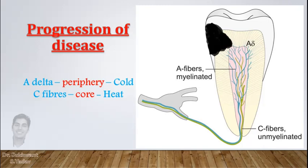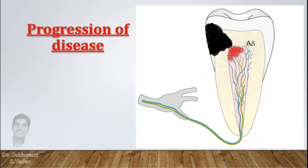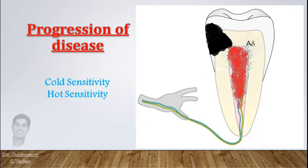Now as A-delta fibers are at the periphery, they will get inflamed first from any stimuli like bacteria from caries or their toxins. So when pulp inflammation starts, first cold sensation aggravates. Then if no treatment is provided, inflammation reaches the C-fibers in the core and the tooth becomes sensitive to both hot and cold, as A-delta fibers are still inflamed.